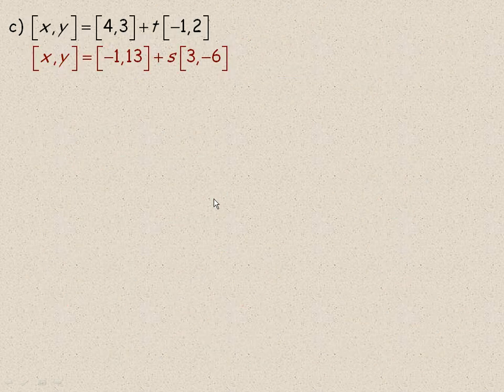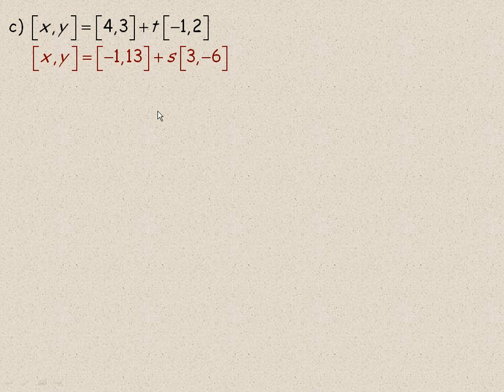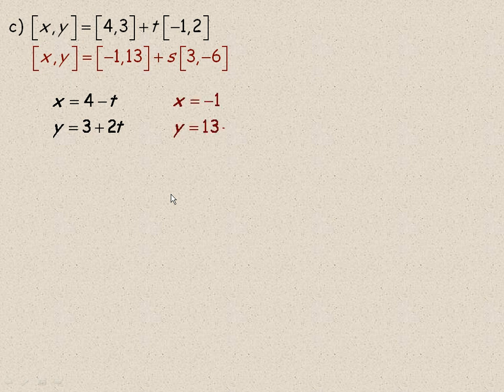One more example in two-dimensional space before we get into 3-space. And again, the equations are given in vector form, so the first thing to do is put them in parametric form. So x would be 4 minus t, y would be 3 plus 2t, x would be negative 1 plus 3s, and y would be 13 minus 6s.